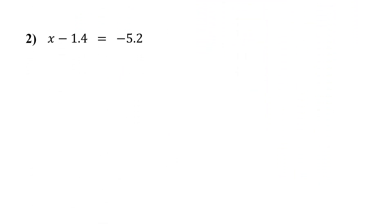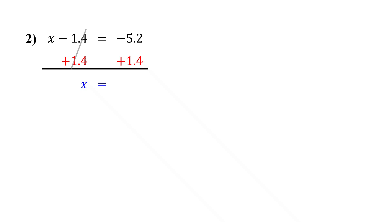Let's solve it with method one first, then try method two. Here, 1.4 is being subtracted from x. So to get x by itself, we add 1.4 to both sides. On the left, these cancel out, leaving just x. What is negative 5.2 plus 1.4? Not the easiest mental math, but with a calculator it is quick — you get negative 3.8.